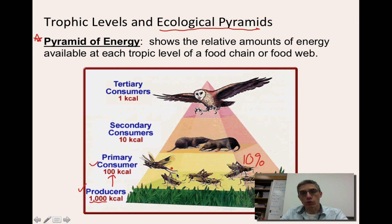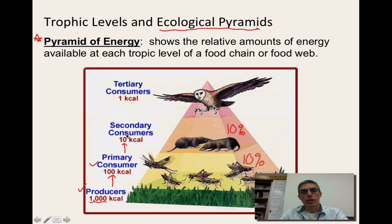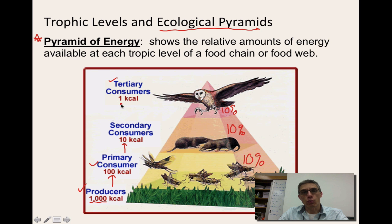These insects are called primary consumers because they are the very first level of consumers that feed on those producers. Continuing to the next trophic level, we have some rodents that are going to feed on these insects, also taking in approximately 10% of the energy — 10% of 100 gives us 10 kilocalories. At the very top of our pyramid we have something called a tertiary consumer. 10% of 10 is one kilocalorie, and that's about how much that owl is going to take in of the energy found in those rodents.